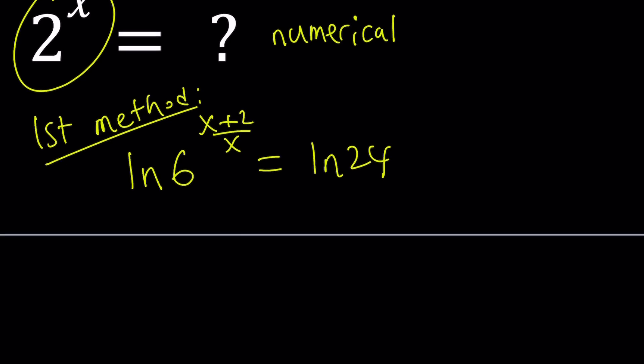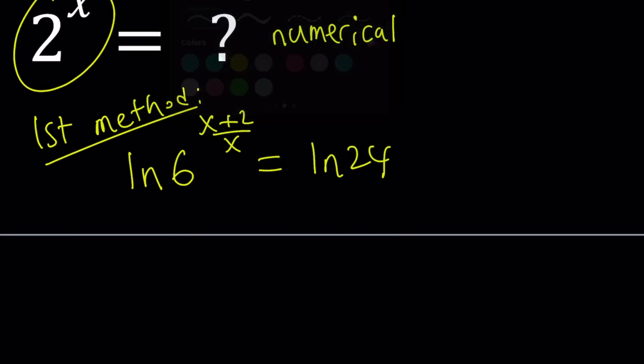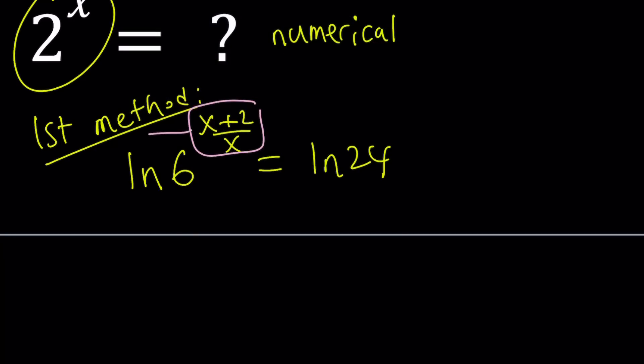Let's simplify this as much as possible. So let's go ahead and use properties of logs. I can move this to the front. That gives me x plus 2 over x times ln 6 equals ln 24.